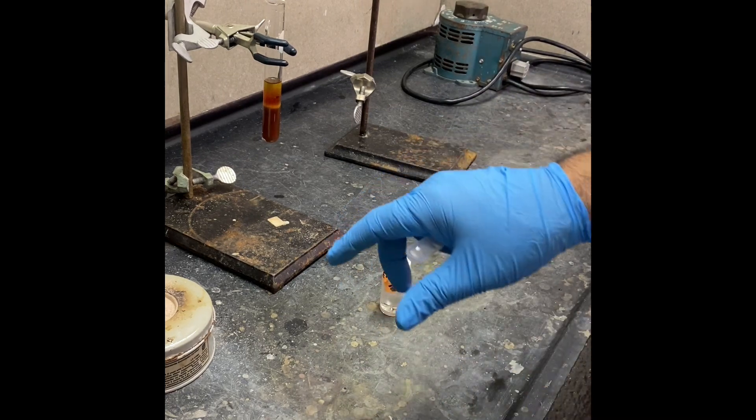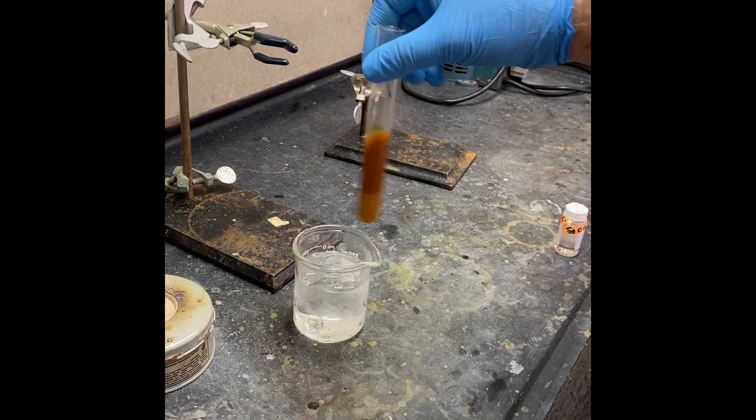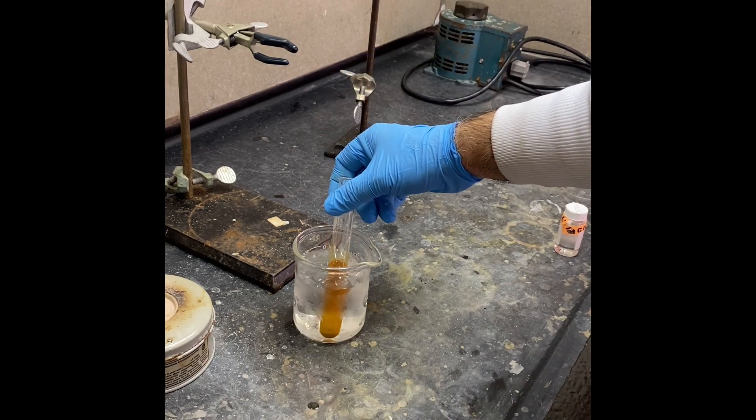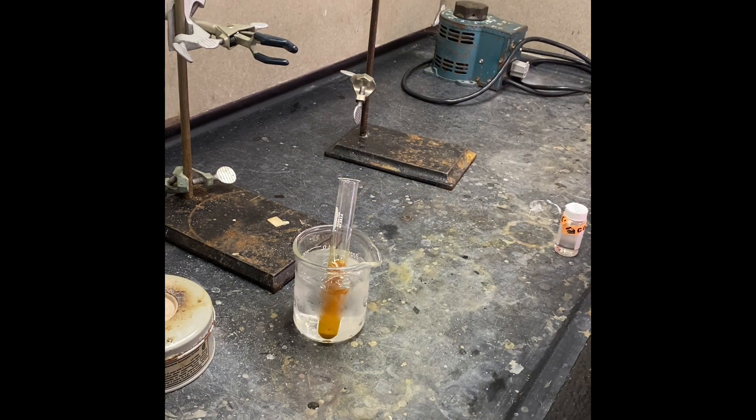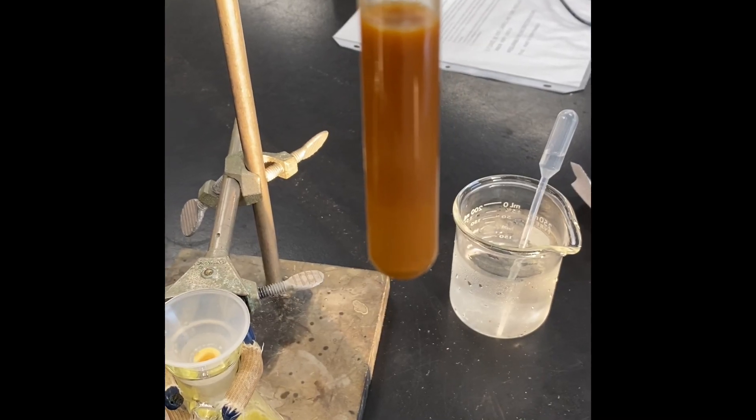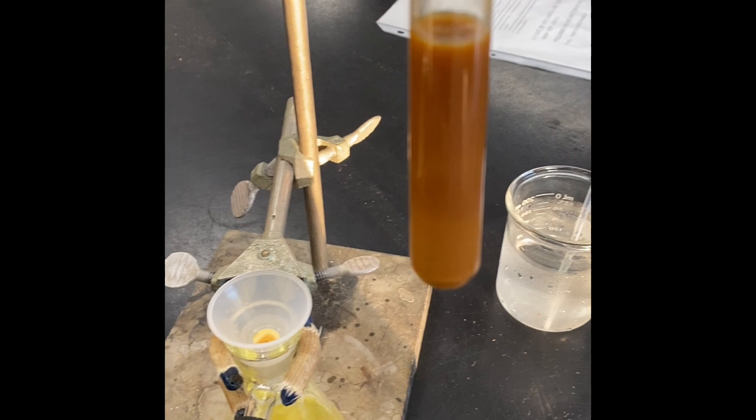We added acetic acid, and now we're going to cool it down in the ice bath. Let it cool down, and then we're going to filter it once it's reached room temperature or colder. After the water bath, that's the product, and now we're going to filter that.